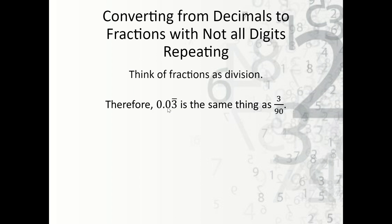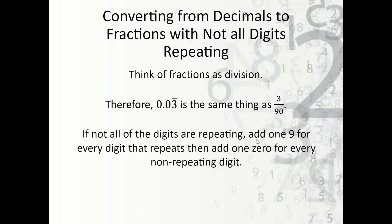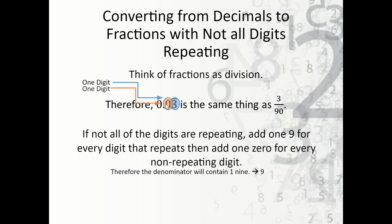For 0.03 repeating, that equals three over 90. For every digit that is repeating, we include a nine; for every digit that's not repeating, we include a zero — just like before. In this case we have one digit repeating, so we include a nine, and one digit that is not repeating, so we include a zero. So the denominator becomes 90.